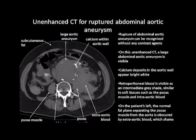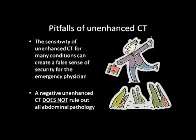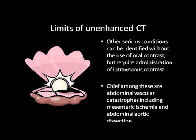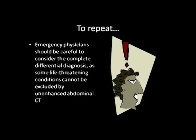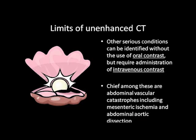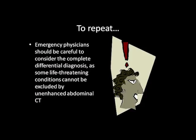Pitfalls of unenhanced CT. The sensitivity of unenhanced CT for many conditions can create a false sense of security for the emergency physician. A negative unenhanced CT does not rule out all abdominal pathology. Other serious conditions can be identified without oral contrast but require administration of intravenous contrast. Chief among these are abdominal vascular catastrophes including mesenteric ischemia and abdominal aortic dissection. Emergency physicians should be careful to consider the complete differential diagnosis, as some life-threatening conditions cannot be excluded by unenhanced abdominal CT.